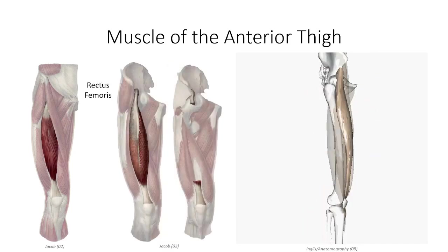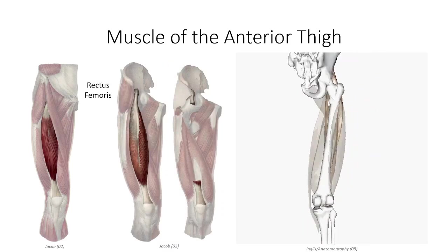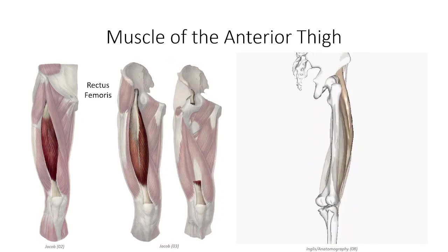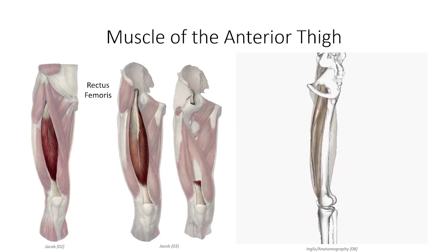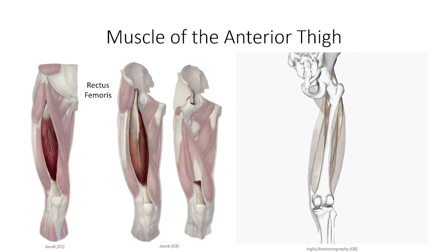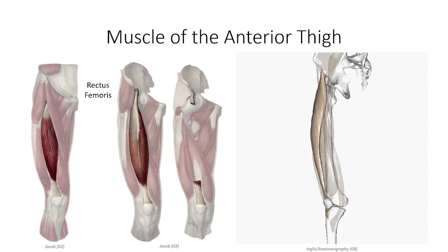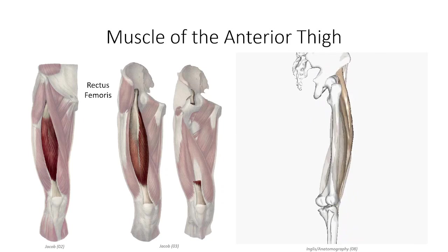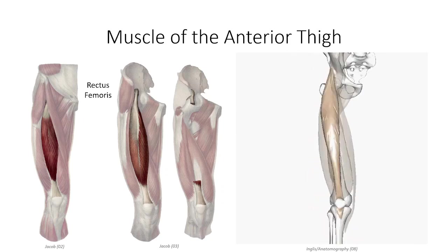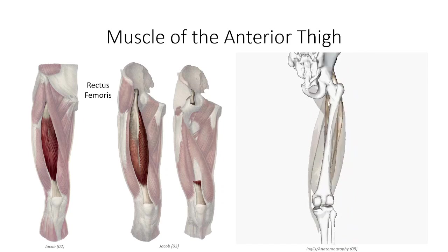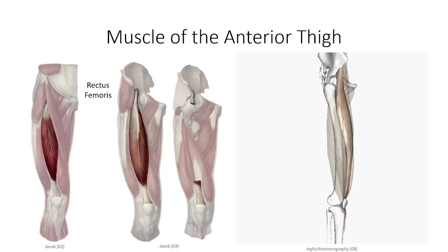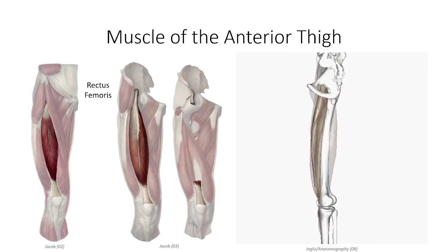Getting back to the quadriceps femoris muscle, the most distinct of the four heads is the rectus femoris. Of the four heads, rectus femoris is the only one to cross both the hip and knee, originating off the anterior inferior iliac spine, just above the superior ridge of the acetabulum. As such, it also contributes to hip flexion. The remaining three bellies are not as distinct and instead blend into one another, collectively known as the vastus muscles. The rectus femoris lays in a groove generated by the blending of these three muscle bellies, like a hot dog wrapped in a bun.